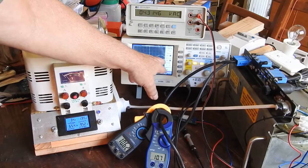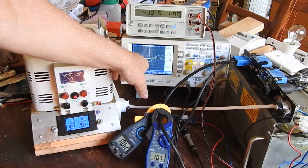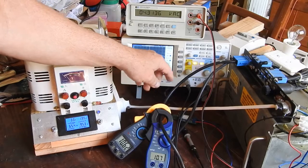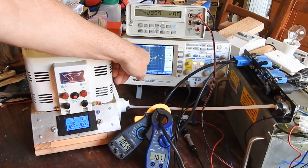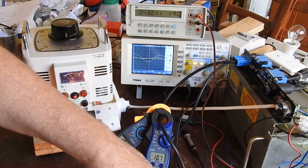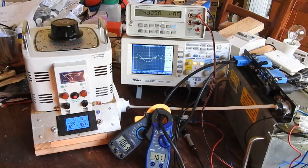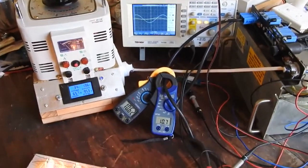That yellow line is the primary voltage going into the transformer, and the white one is the secondary voltage across all these light globes down here.